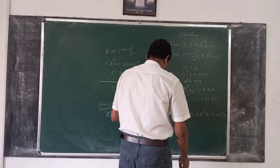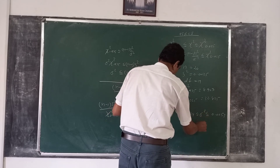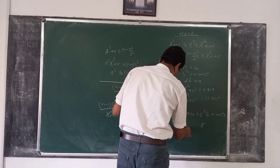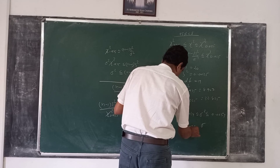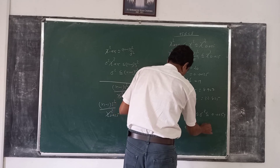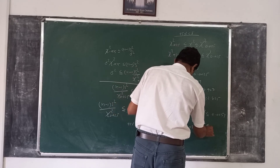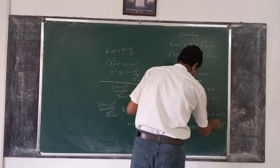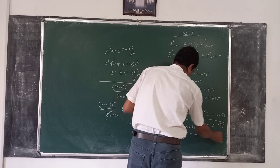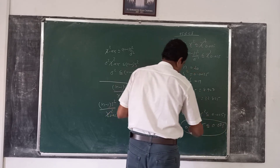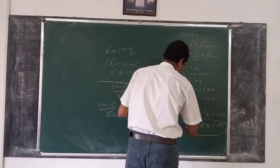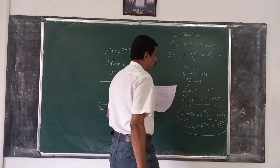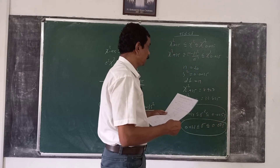And if you take the square root, you will get 0.038 less than or equal to sigma less than or equal to 0.073. This is the 95 percent confidence interval for the standard deviation.